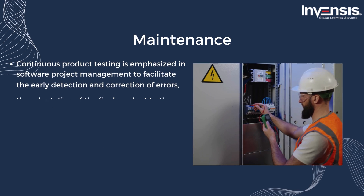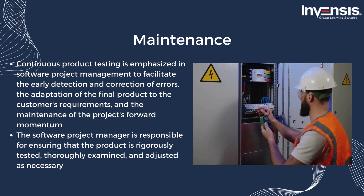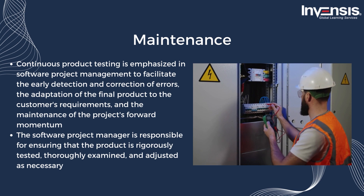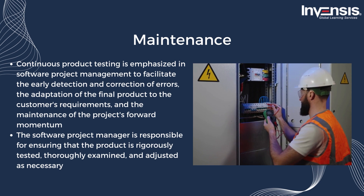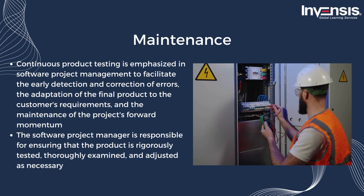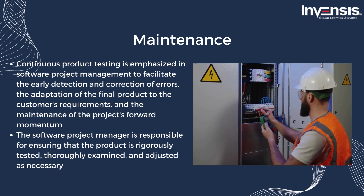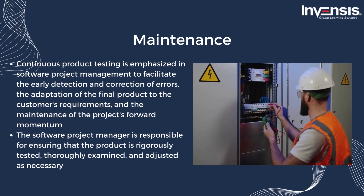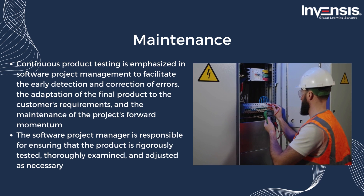The next aspect is maintenance. Continuous product testing is emphasized in software project management to facilitate the early detection and correction of errors, the adaptation of the final product to the customer's requirements, and the maintenance of the project's forward momentum. The software project manager is responsible for ensuring that the product is rigorously tested, thoroughly examined, and adjusted as necessary.